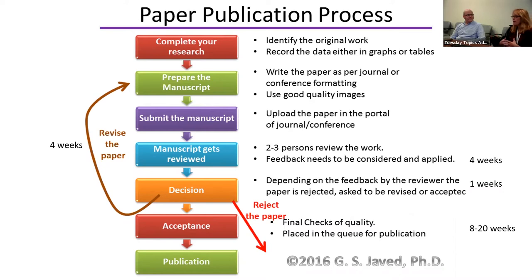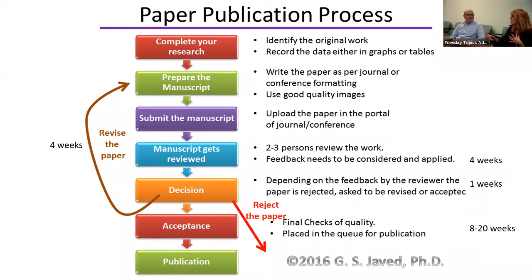Typically you send your manuscript out, it might be under review for four weeks if you're lucky, then it goes to the editor. It might sit with the editor for one week, or longer — if you hit a holiday season, much longer. Then you get your comments back and they will either accept, reject, or put it in a non-reject non-accept status. You may have time to revise it, then it goes back out for review — sometimes to original reviewers, sometimes new reviewers, sometimes just the editor, depending on the journal.